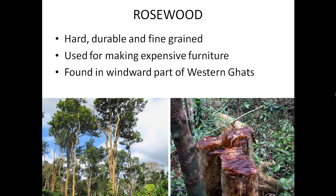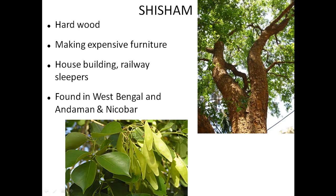Now we will see some economically important species of trees found in evergreen forest. First, Rosewood — hard, durable, and fine-grained, it is used for making expensive furniture and is mainly found on the windward part of the Western Ghats. Second, Shisham — as you can see in this picture, the Shisham tree is very tall with a very dense canopy. It provides hardwood and is used for making expensive furniture, building houses, and railway sleepers. It is primarily found in West Bengal and some parts of Andaman and Nicobar Islands.